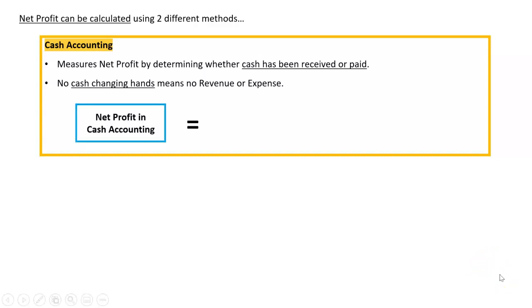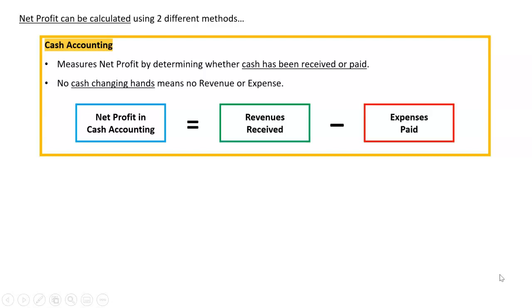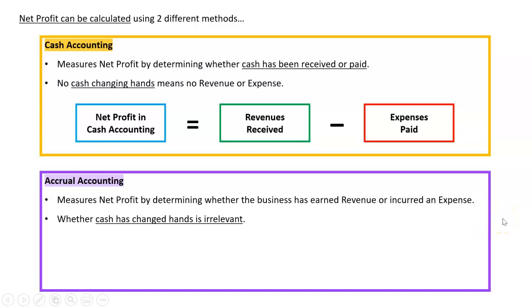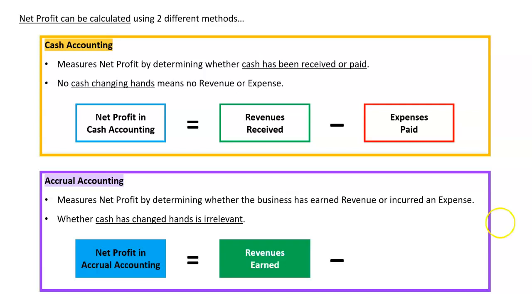Under cash accounting, we calculate net profit as revenues received versus expenses paid. If a revenue isn't received we don't record it, and if an expense isn't paid we don't record it. Accrual accounting, by contrast, measures net profit by determining whether the business has earned revenue or incurred an expense. Whether cash has changed hands is irrelevant, so we calculate net profit as revenues earned versus expenses incurred.